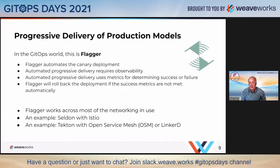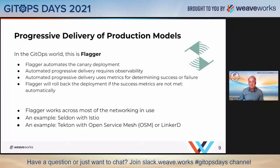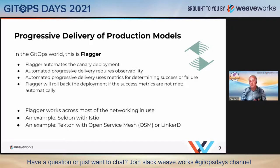The last topic is production models. A production model usually consists of two things: a model, and an application that serves the model. For example, Seldon has KFServe, TensorFlow has a server, Kubeflow has a server — they all do this similarly, so your user application can get a response. A production system is not a training system — it is run, managed, and scaled as production. It has to be very resilient, reliable, with high availability and scaling.